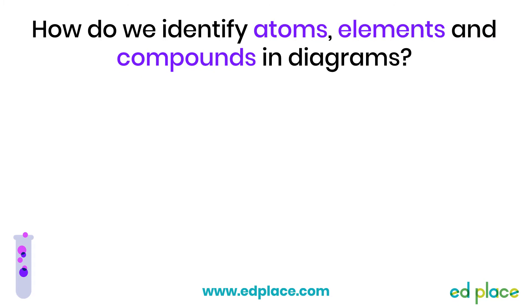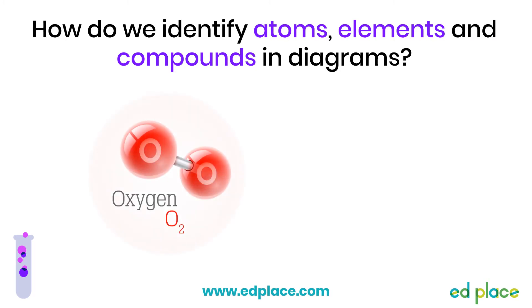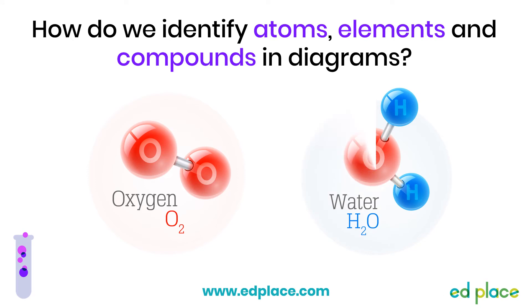Atoms of the same element in diagrams will be drawn as the same size and the same colour, as shown here in the oxygen molecule. If the atoms are of different elements, they'll be a different colour or size, as shown here in the water molecule.